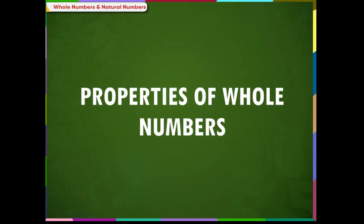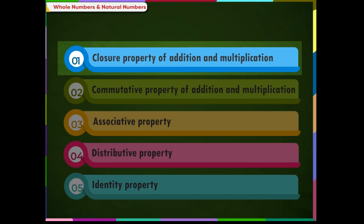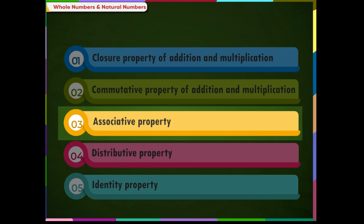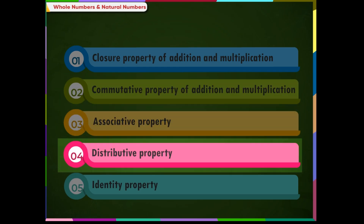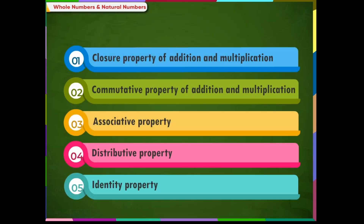Properties of Whole Numbers. There are five properties of whole numbers: closure property of addition and multiplication, commutative property of addition and multiplication, associative property, distributive property, and identity property. Let us understand each of the properties of whole numbers one by one.